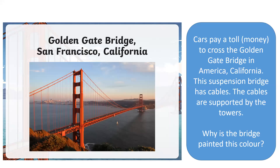Here is the Golden Gate Bridge in San Francisco, California. Cars pay a toll — money — to cross the Golden Gate Bridge. This suspension bridge has cables, and the cables are supported by the towers. Why is the bridge painted this colour? What practical reason can you think of for painting it burnt orange? Do you think the colour has been chosen to stand out? Think about what you would see flying in the sky — that's right, aeroplanes. Aeroplanes need to be able to see this bridge, and that's why it's painted that bright orange colour, to make it stand out.